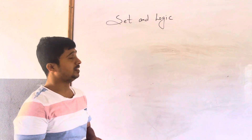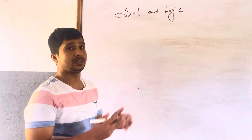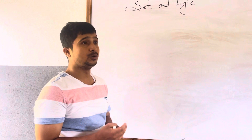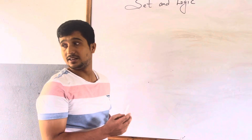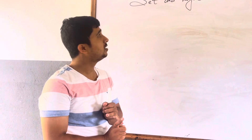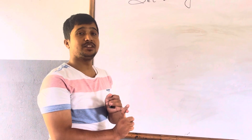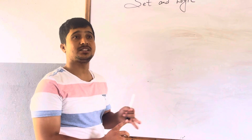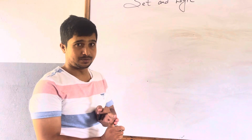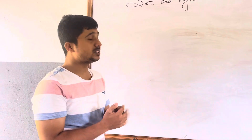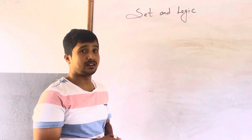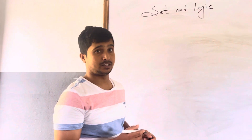Especially in mathematical statements, we have to know about three types of sentences: exclamatory sentence, imperative sentence, and interrogative sentence. If this type of sentence is present, they are not mathematical statements.